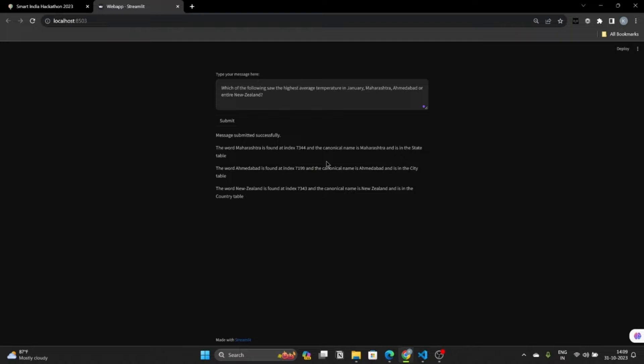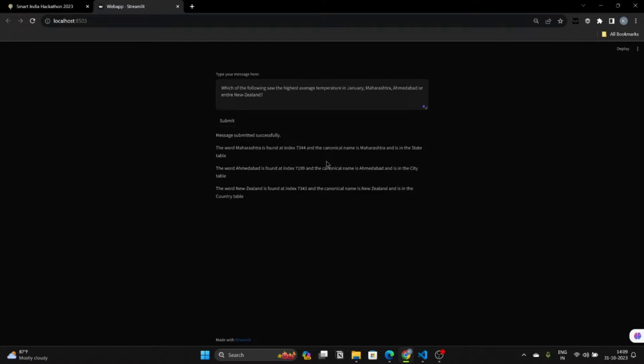Similarly, it produced output for the other words too. The future updates can include features to fetch specific data related to the location and also the model can be improved by feeding a better training dataset. This solution's main aim is to extract location names from a natural language query or sentence which has been achieved as we demonstrated. Thank you.